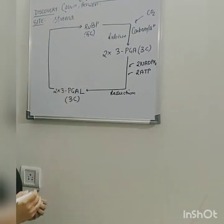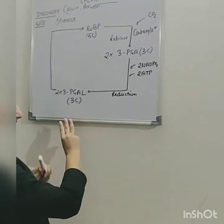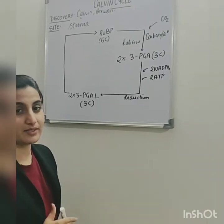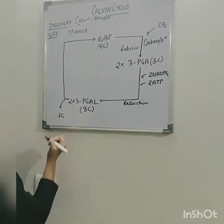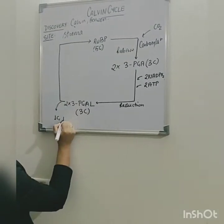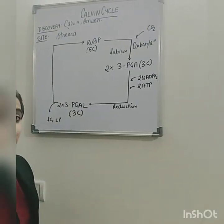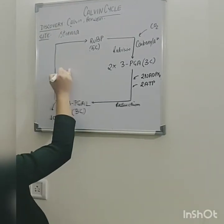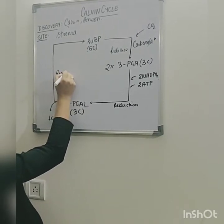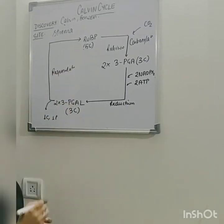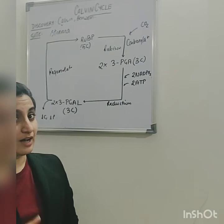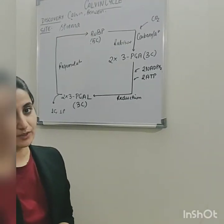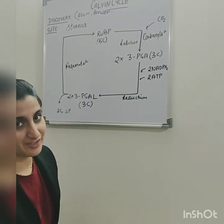You have 2 molecules — 3 carbons and 3 carbons, giving 6 carbons in all. From these 6 carbons, 1 carbon is going to exit, along with 1 phosphate. This 1 carbon is going to contribute to the making of glucose. The rest 5 carbons are regenerated back. Now you have only 1 phosphate left, and in order to get another phosphate, you are going to utilize 1 ATP, which comes from the light reaction.